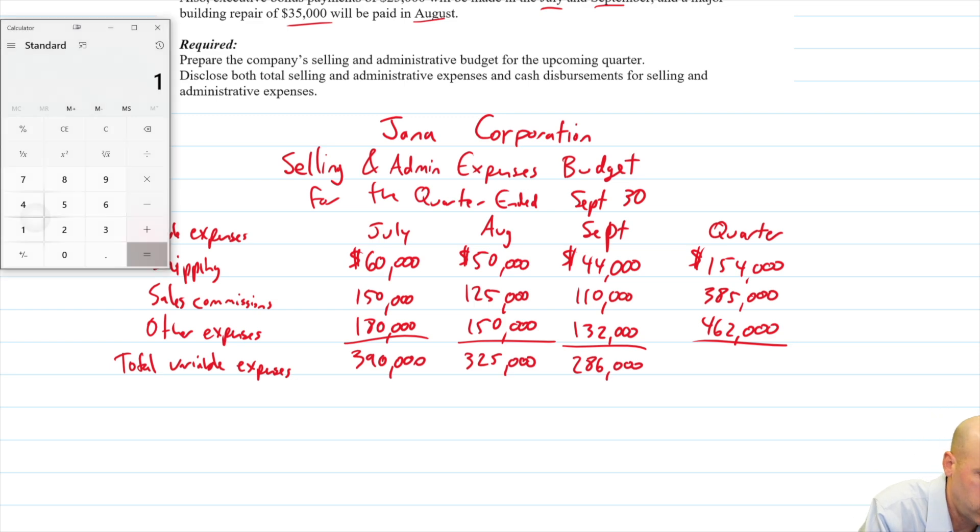And last, 154 plus 385 plus 462. 1001. Okay, so there's our total variable expenses. Because we're not done, I'm not going to put a dollar sign or a double underline here. This is just total variable, I guess I should say, selling and admin expenses.